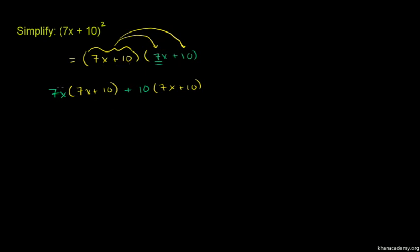7x times 7x equals 49x². When you multiply 7 times 7, you get 49, and x times x gives x².